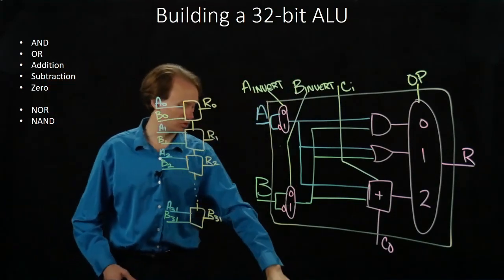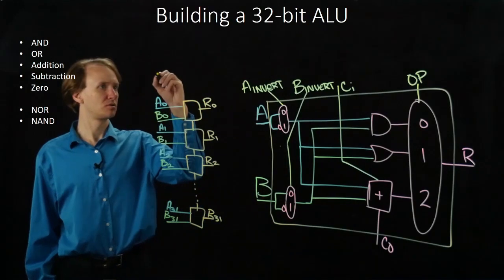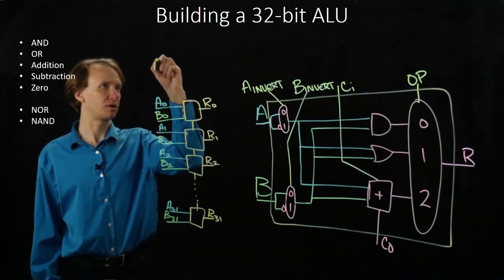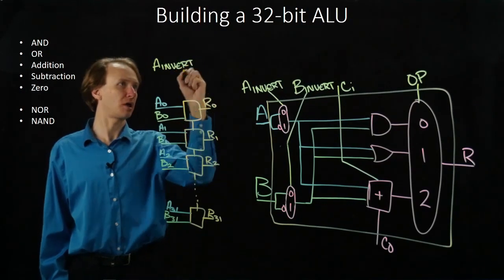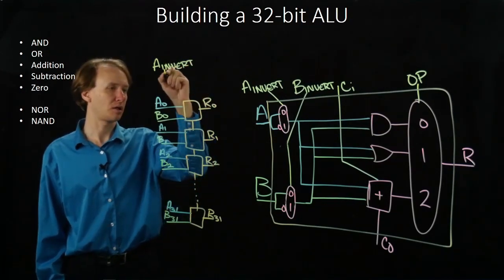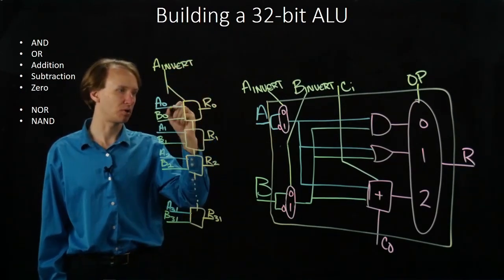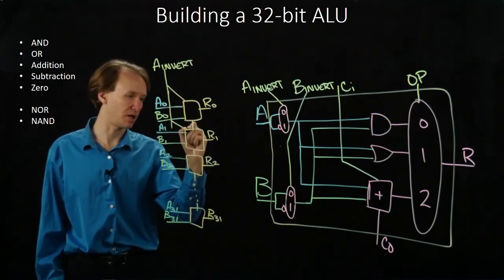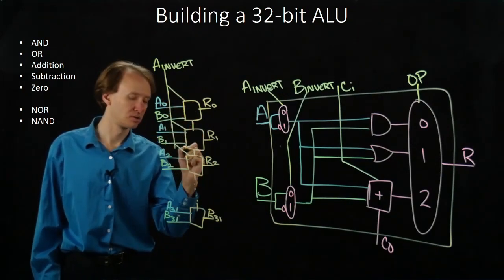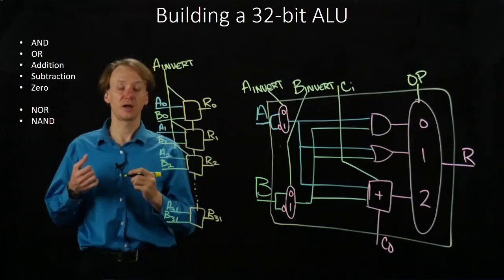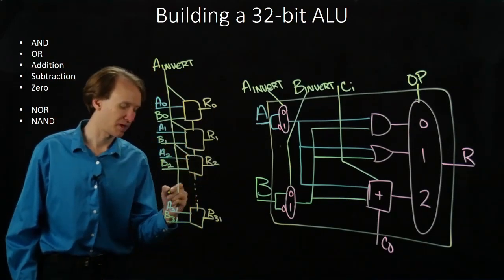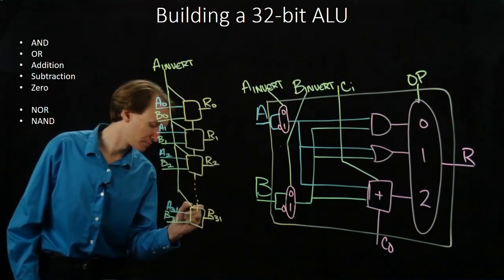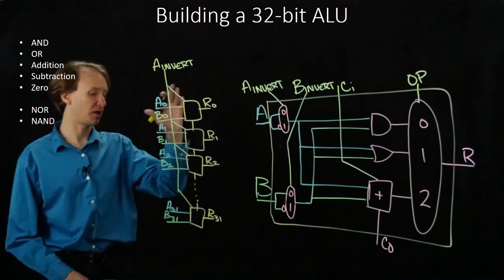Now we have all of the control signals. So I have an A invert line, and I definitely need to pass this one to each one of the one-bit ALUs that I've got. In order to do NOR or NAND, I need to invert all of my A's and all of my B's. So there's my A invert line.